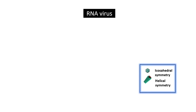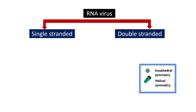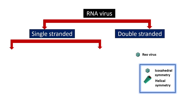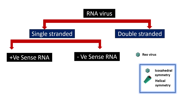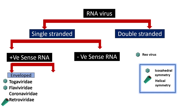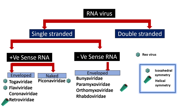RNA viruses have RNA as their genetic material and can have either double-stranded or single-stranded RNA. The key example of a double-stranded RNA virus is reovirus. Single-stranded RNA viruses are subclassified into two groups: positive-sense RNA and negative-sense RNA. Examples of positive-sense enveloped RNA viruses include togaviruses, flaviviridae, coronaviridae, and retroviridae, while naked positive-sense RNA viruses include picornaviridae. Negative-sense enveloped RNA virus families include bunyaviridae, paramyxoviridae, orthomyxoviridae, and rhabdoviridae.